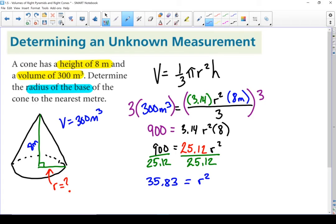Last step: we'll take the square root of both sides, and I'm left with a radius of 5.985. Let's round that off to 6 meters. There is the radius of my base.